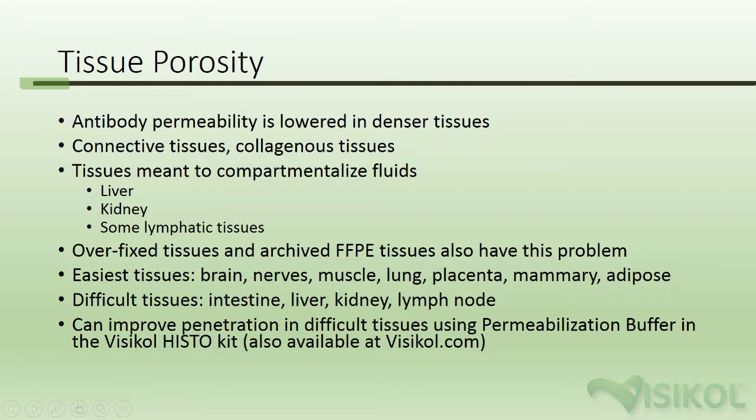Tissue porosity. Antibody permeability is lowered in denser tissues. Connective tissues, collagenous tissues, and tissues meant to compartmentalize fluid such as the liver, the kidney, and some lymphatic tissues often present problems when doing immunolabeling. Overfixed tissues and archived formalin-fixed paraffin-embedded tissues also have this problem. The easiest tissues to stain are brain, nerves, muscle, lung, placenta, mammary, and adipose tissue. The most difficult tissues to label are the intestine, liver, kidney, and lymph node.